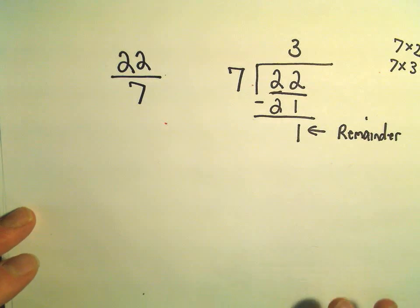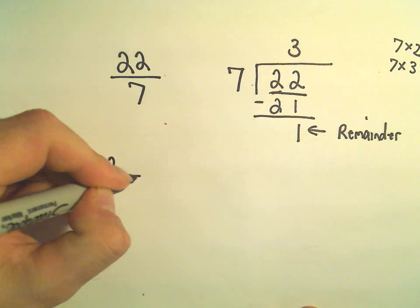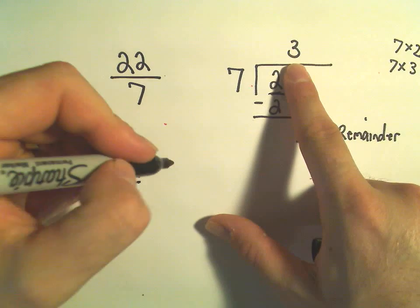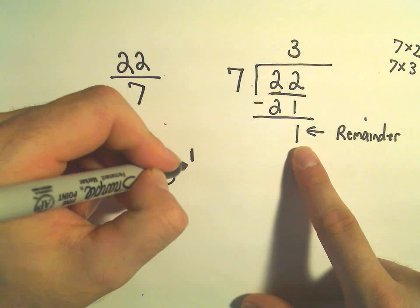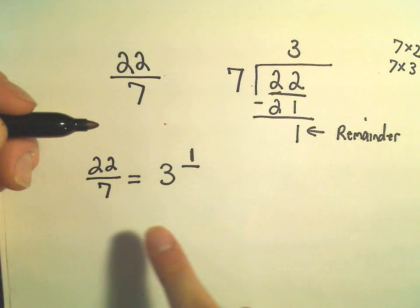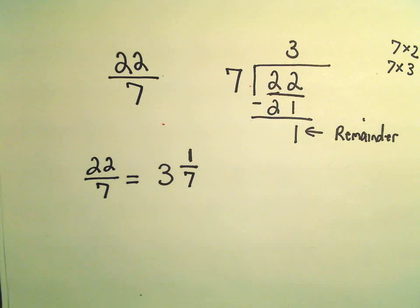And all we do to write this as a mixed number, we simply take twenty-two over seven, and we write that as the number that we get on top, three. And then we take our remainder and we divide it by the original denominator.